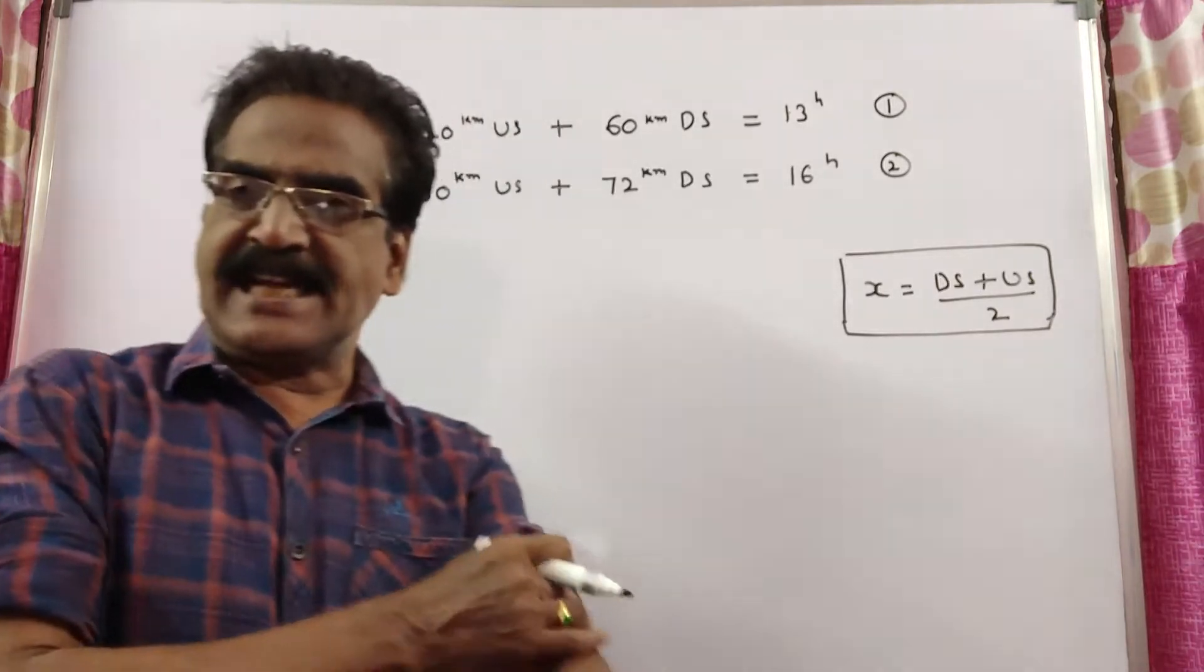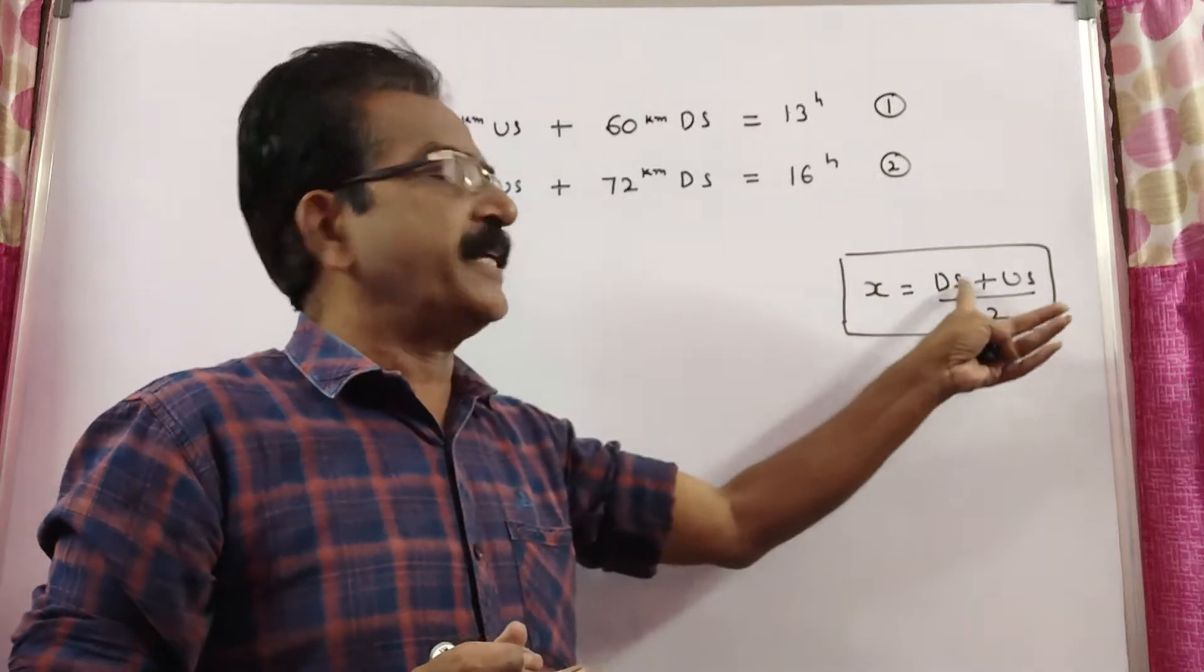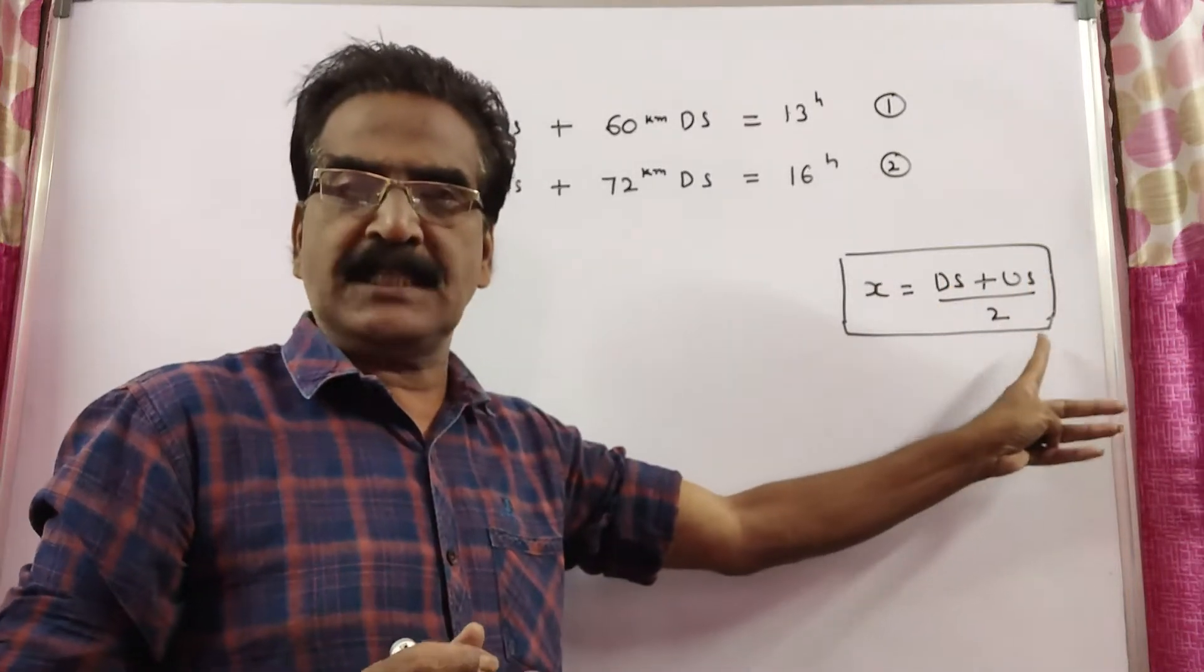So, what is the speed of the boat in still water? That is, you have to find x. x is equal to DS plus US by 2. This thing we know.